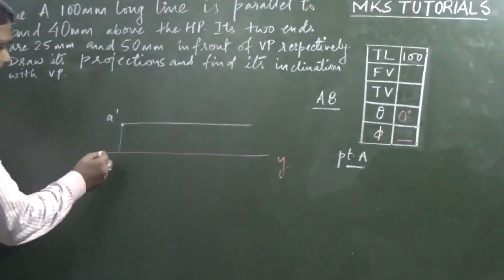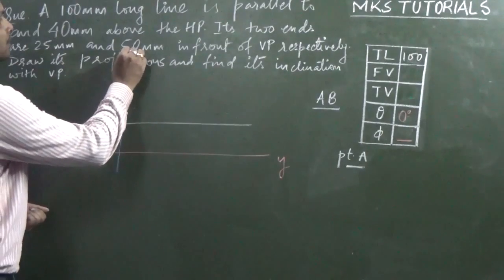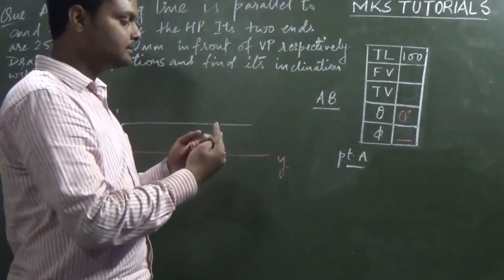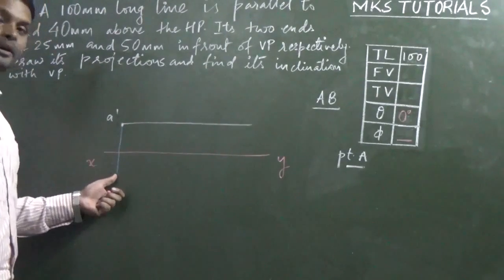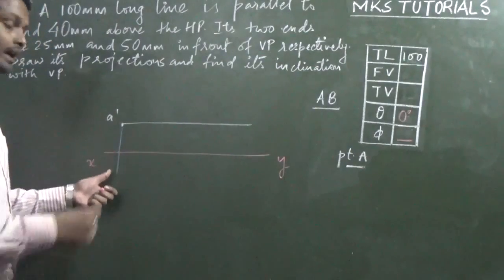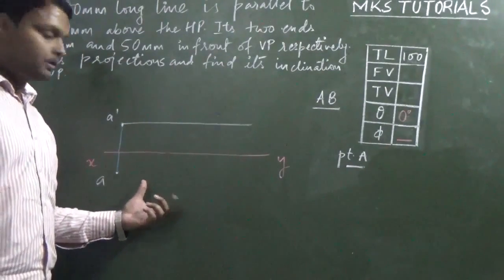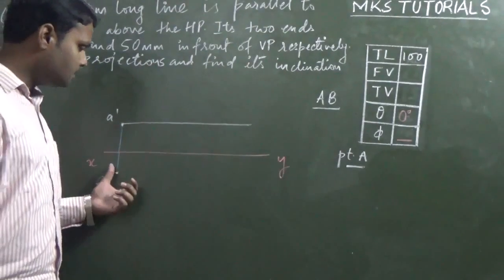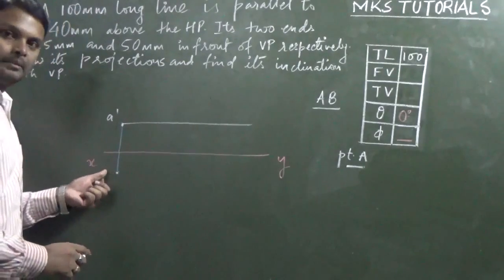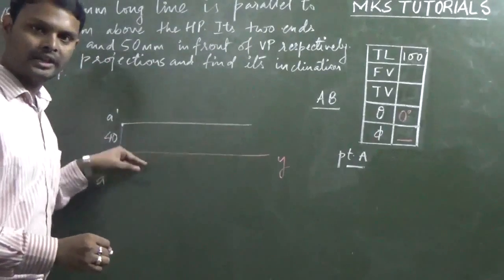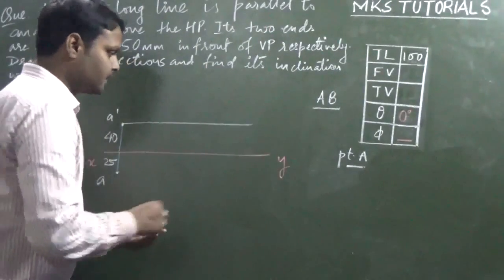The points are 25mm and 50mm. In VP case, if it is in front then it is down, if behind then it is up. This is above HP, but the point is below because this is in front of VP. Since my line is inclined to VP, true length will be equal to VP. I know two things: this is 25mm, this is 40mm. This line is parallel to XY. This is 25 below, so 50 below. And here the point is 10mm. So here this is 50mm.